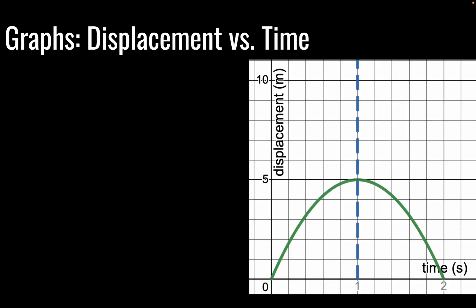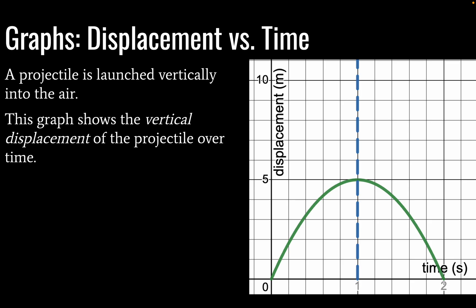Next, I want to look at a few graphs, and the first graph we have here is displacement versus time. So, this is a graph of a projectile that is launched vertically into the air. So, straight up and down. And I think that point is clear. This particular object is going to go up for exactly one second and come back down in exactly another second.